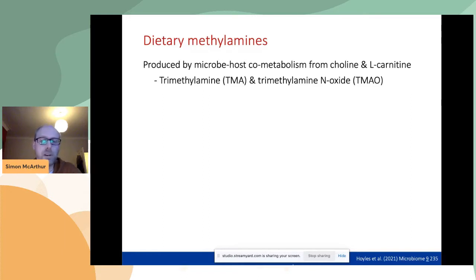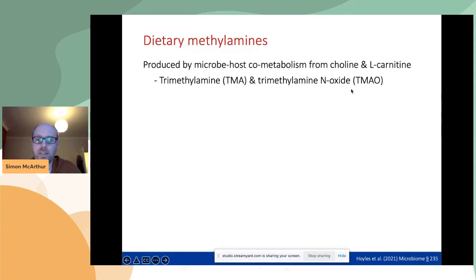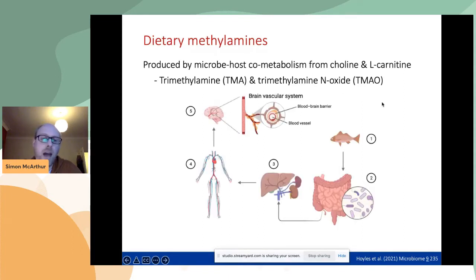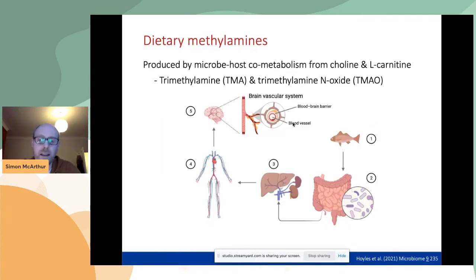These are produced by microbe-and-host co-metabolism of choline and L-carnitine. The two I'm going to focus on most are trimethylamine, or TMA, and trimethylamine N-oxide, or TMAO. These are produced from choline and carnitine — fish, meat, and similar foods contain a lot of these precursors.